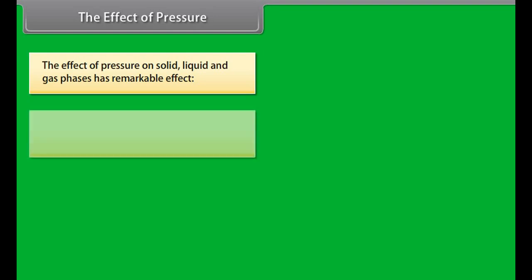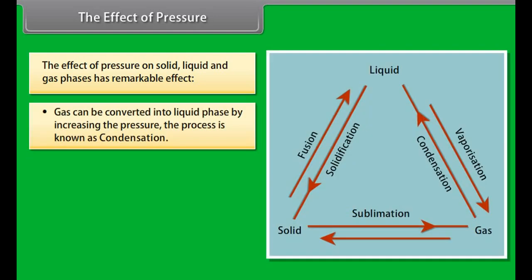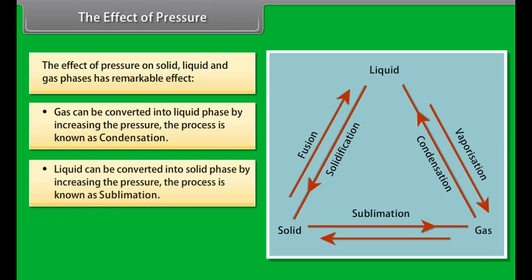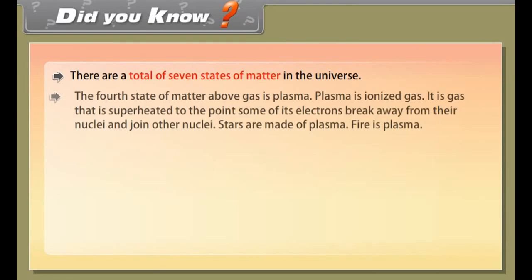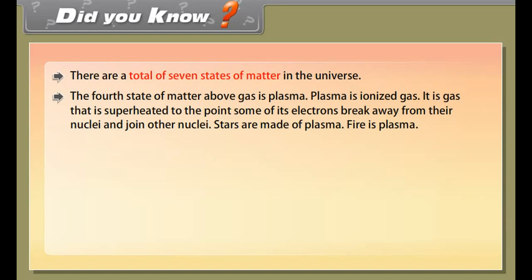The effect of pressure on solid, liquid, and gas phases has remarkable effect. Gas can be converted into liquid phase by increasing the pressure; the process is known as condensation. Liquid can be converted into solid phase by increasing the pressure; the process is known as sublimation. These phases are reconverted by lowering the temperature.